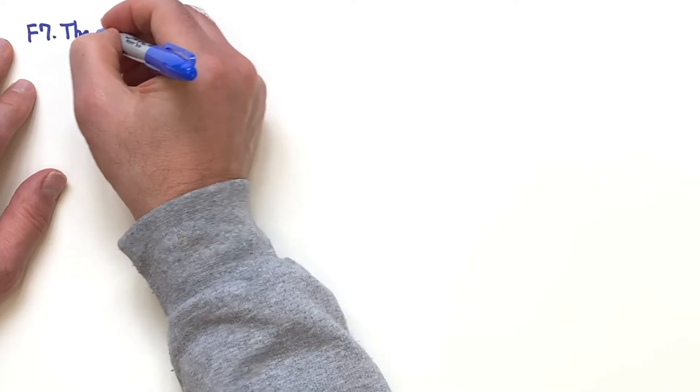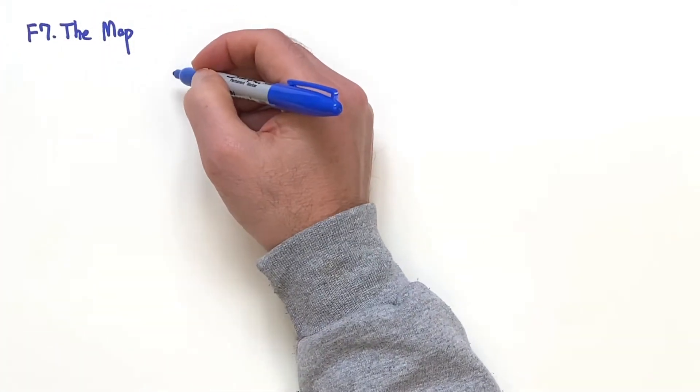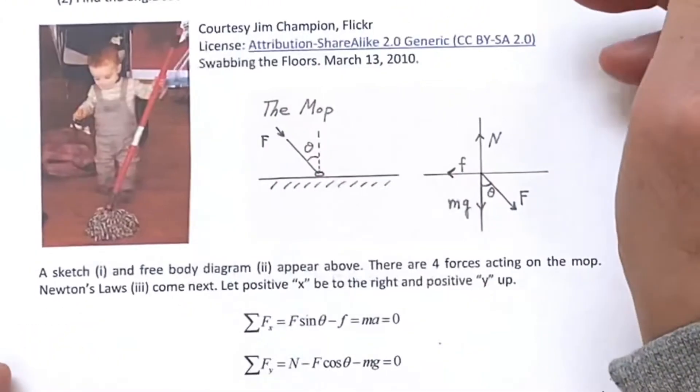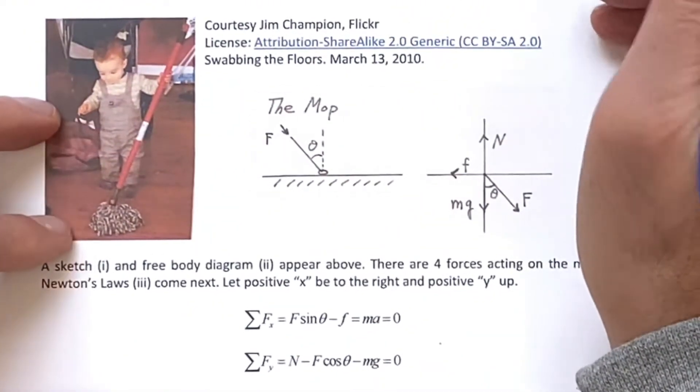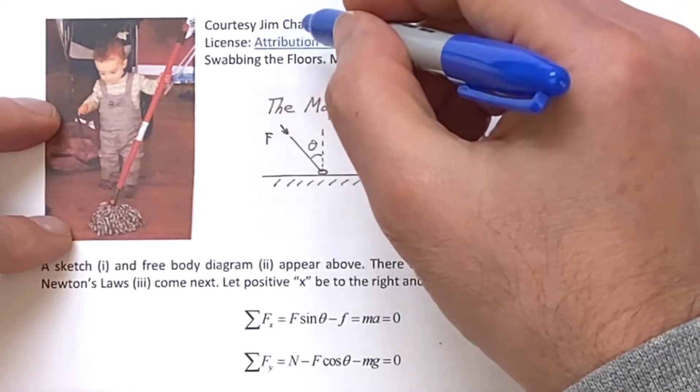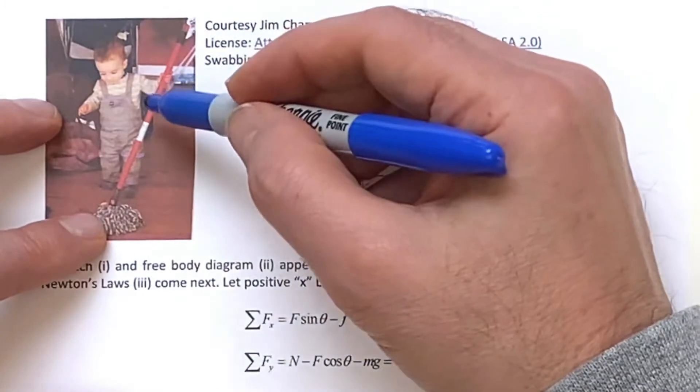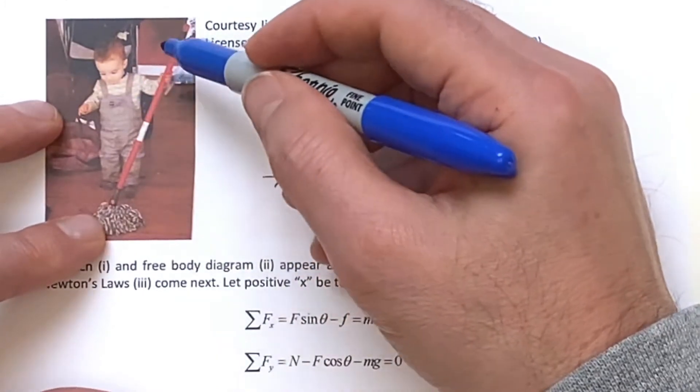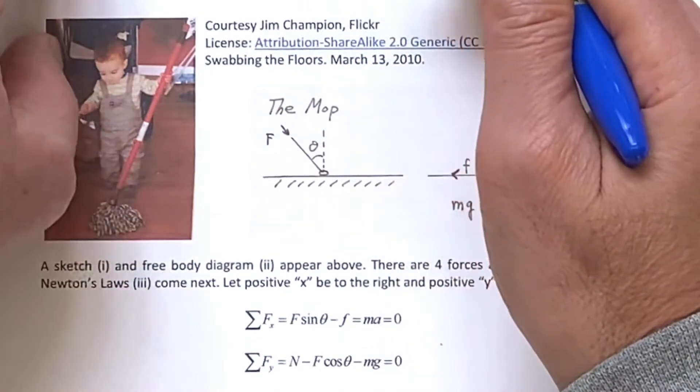F7, the mop. I remember this problem from long ago. Here's a nice picture from Jim Champion's collection on Flickr of a mop and a worker using it. We're going to do the mop problem.